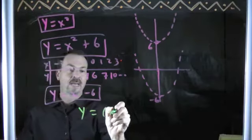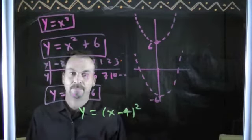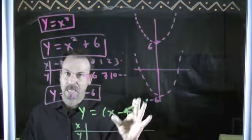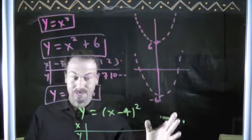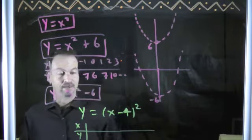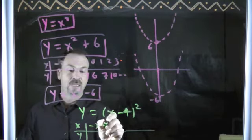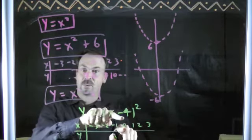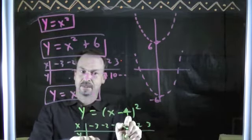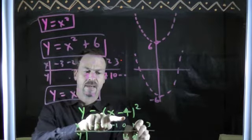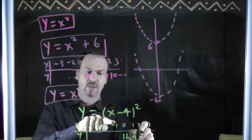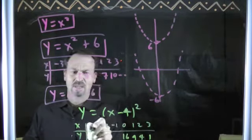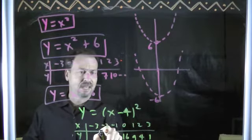y equals, say, x minus 4 squared. And if I actually draw a table of values for this, and I keep saying this even for advanced calculus classes, there's no shame in just plotting actual points if you just want to get a feel for stuff. Negative 3, negative 2, negative 1, 0, 1, 2, 3. 0 is now 0 minus 4. Negative 4 squared, 16. 1 is now 1 minus 3, negative 3 squared, 9. 2 is negative 2 squared, 4. 3 is negative 1 squared, 1. And these numbers are going to get even worse, I think. Negative 2 is negative 6 squared, 36.